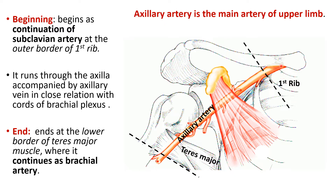The naming convention is based on location: when in the neck it is the subclavian artery; when running in the axilla it is the axillary artery; and when it enters the brachium or arm it becomes the brachial artery. So the extent of the axillary artery is from the outer border of the first rib to the lower border of teres major.